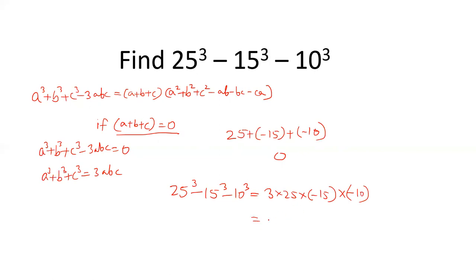When we multiply this, we get 375 into 10, and the product of these is 11,250. So the value of 25 cube minus 15 cube minus 10 cube equals 11,250.